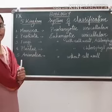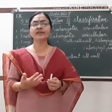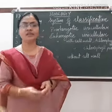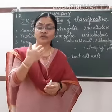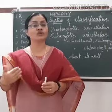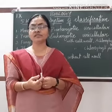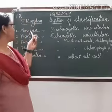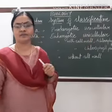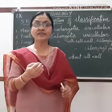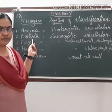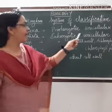On what basis did they classify living organisms? The first criterion was whether the organisms were prokaryotic or eukaryotic — whether they have a developed nucleus or not. Organisms which did not have a developed nucleus were put into the first kingdom, Monera. Monera includes organisms which are prokaryotic and unicellular. All organisms which had a developed nucleus were grouped under the second kingdom, Protista, which includes organisms that are eukaryotic and unicellular.